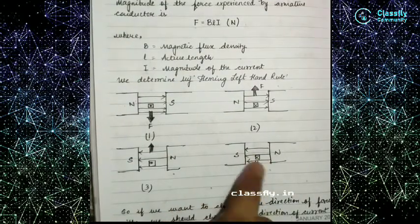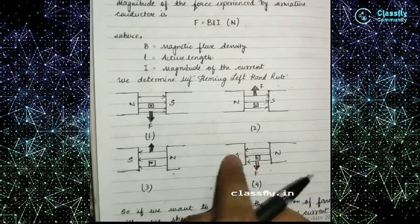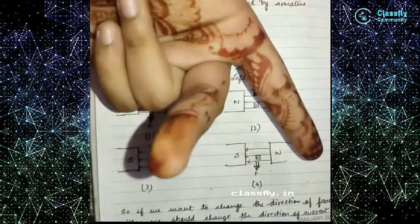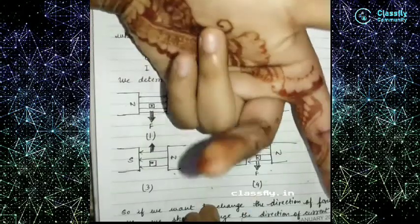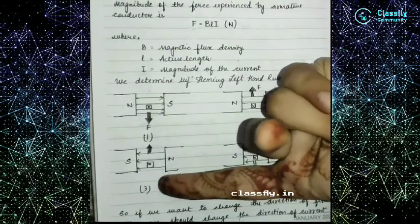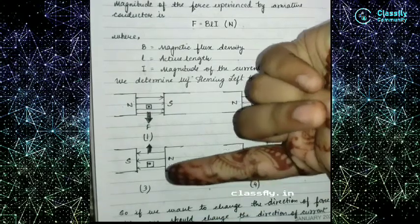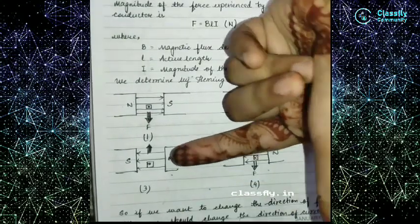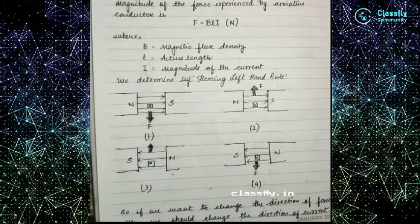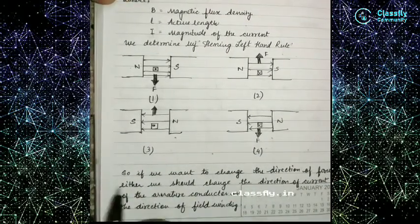In the final case, the current is outside the paper and the poles have been changed, but the field still moves from north to south. Applying Fleming's left hand rule gives a force direction that is reversed compared to the first case. To change the direction of force, we must either change the direction of the current or change the pole settings.